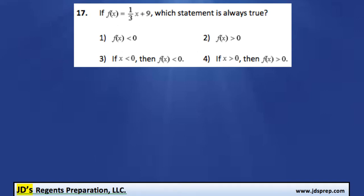This is problem number 17 from the June 2014 Algebra Regents exam. In this question, we're given the function f(x) = (1/3)x + 9. We're going to find out which one of these four statements is always true.